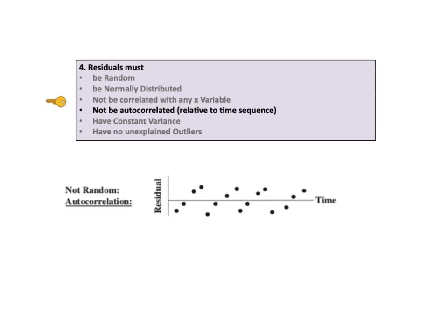Residuals must not be correlated with each other. That's called autocorrelation. This can be seen in a time sequence plot with the time period as the horizontal axis and the value of the residual on the vertical axis. There should be no pattern. Here is an example of what we should not be seeing.